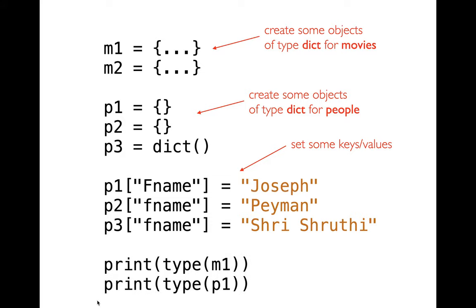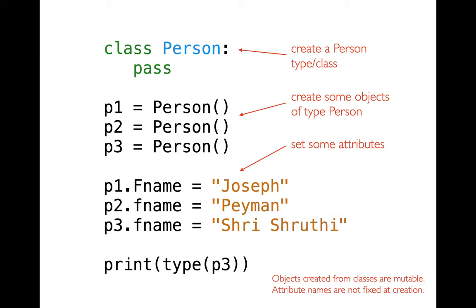Let me show you how I might create a new type for people. The syntax in its most minimalist form is the keyword 'class'. A class is really a certain kind of type — most types are actually classes. So I say 'class', then the name of my new type, which is 'Person', then a colon. After that there could be hundreds of lines. Here in the simplest form, I'm just saying 'pass'. Pass means do nothing — Python doesn't like emptiness after a colon, so we do that to make Python happy.